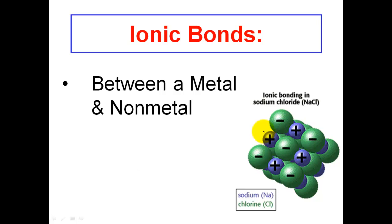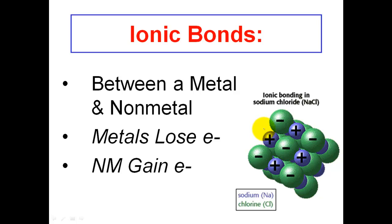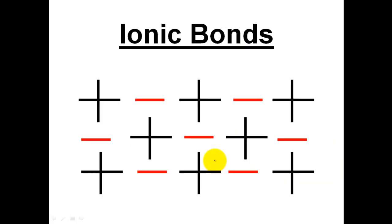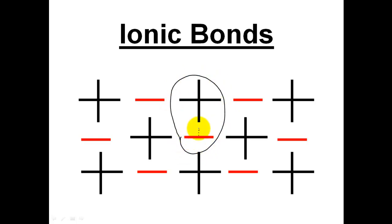Ionic bonds are typically between metals and non-metals — the left side and the right side of the periodic table. Metals tend to lose their electrons, and non-metals gain their electrons. So non-metals will become negative, and metals will become positive. An ionic bond can also be considered a framework of positive and negative charges. My negative here has an ionic bond to the next particle, the positive — that is the negative-positive attraction.